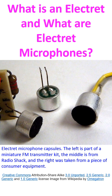Electrets are the electrostatic equivalents of permanent magnets. While a permanent magnet has two magnetically charged poles, an electret has two electrically charged ends. It has internal and external electric fields, just like the magnet has magnetic fields. In short, an electret is a dielectric material which has electrical polarization.